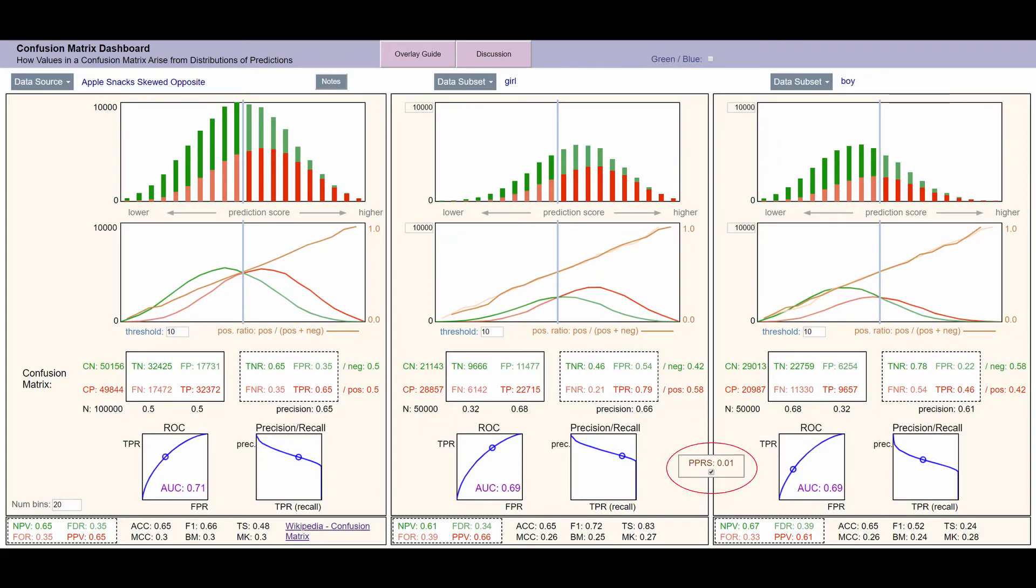But there is no free lunch. Even when a decision process shows no prediction bias, that doesn't mean that when you set a decision threshold, the confusion matrices for two subpopulations will necessarily align. That depends upon the base rates and prediction score distributions for the two populations.